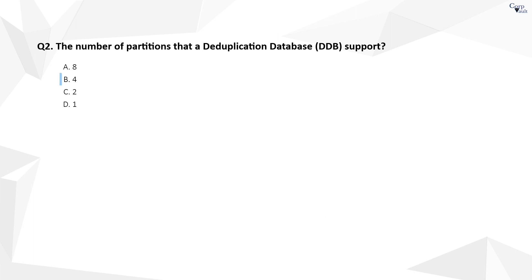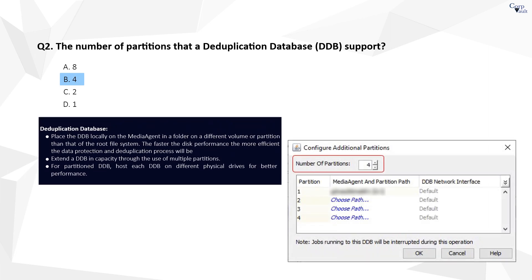The correct answer is B. You can add more partitions to an existing and online deduplication database that is used by a storage policy enabled with deduplication. For example, you can change a single DDB configuration to a 2-partitioned or a 4-partitioned DDB configuration.